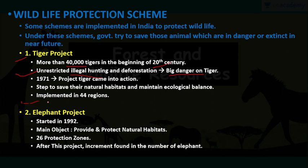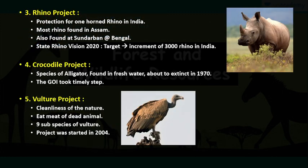The second project is the Elephant Project, started in 1992, to provide and protect natural habitats for elephants. We have a total of 26 protection zones right now, and after this project an increment was found in the number of elephants. We also have a Rhino Project, a Crocodile Project and a Vulture Project — these are run to save different kinds of animals and their species.